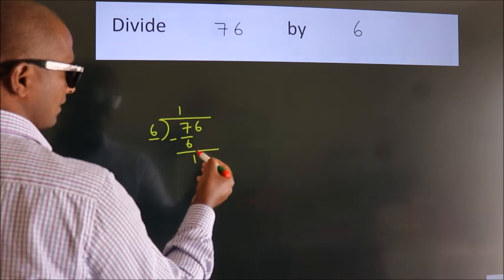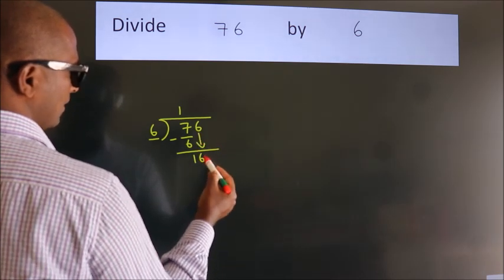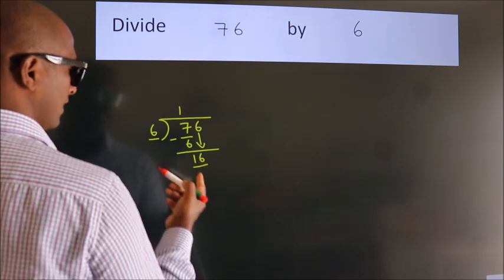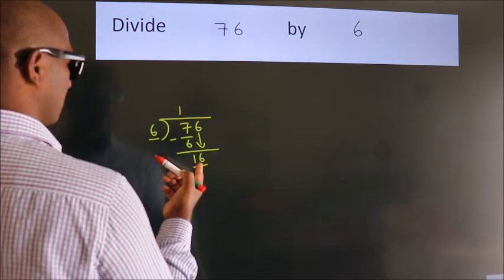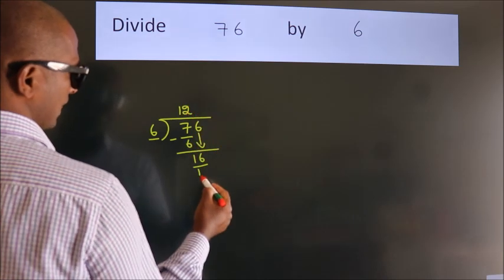After this, bring down the beside number. So, 6 down. So, 16. A number close to 16 in 6 table is 6 twos, 12.